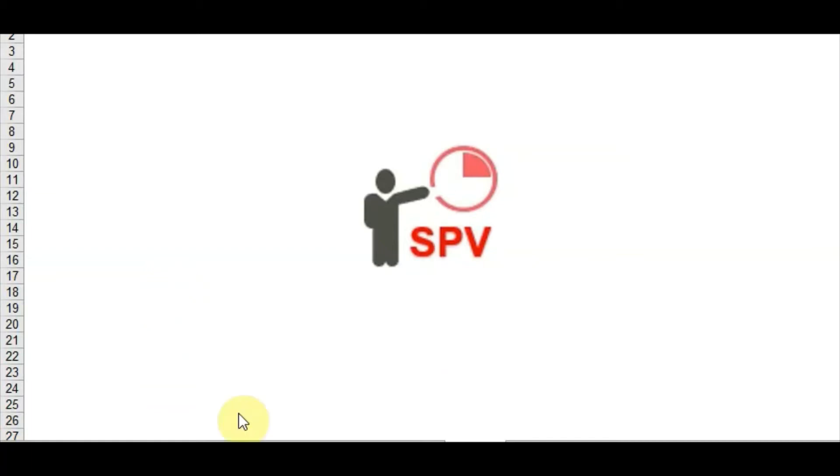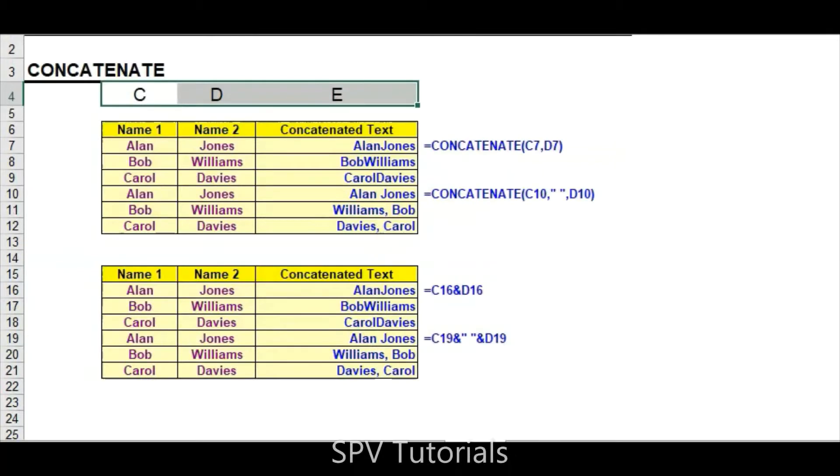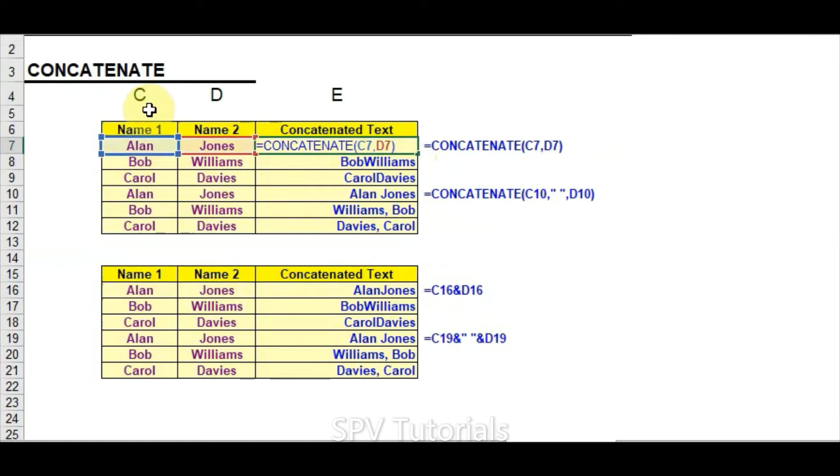Today we'll see the concatenate function. Concatenate means we can add two text or two numbers or anything we can add together. If you want to add name 1 and name 2, you can simply use the concatenate function. For example, concatenate C7 and D8, which will give the results as shown here.